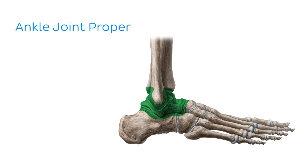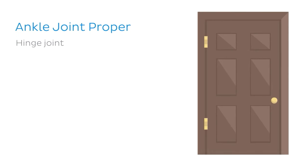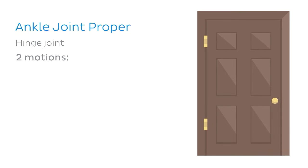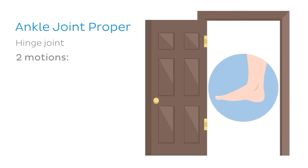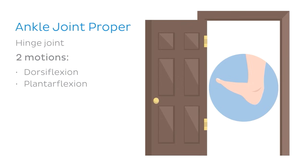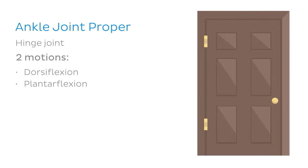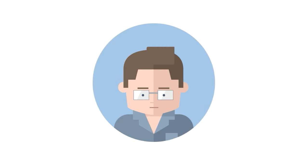The mortise arrangement of the tibia and fibula means the talus can only move in one axis, making the ankle joint a hinge joint that allows only two motions, similar to the hinge of a door. The ankle can dorsiflex, where the distal end of the foot moves superiorly — the dorsum of the foot flexing towards the leg. When the ankle moves in the other direction, it is called plantarflexion, where the distal portion of the foot is being planted into the floor and the plantar surface of the foot is being flexed.